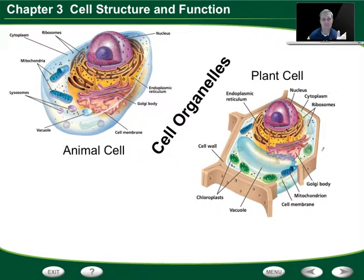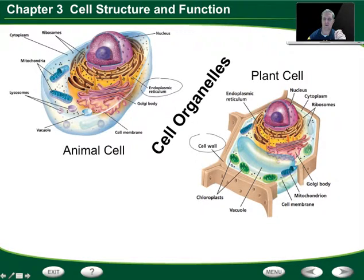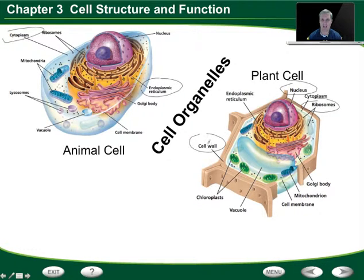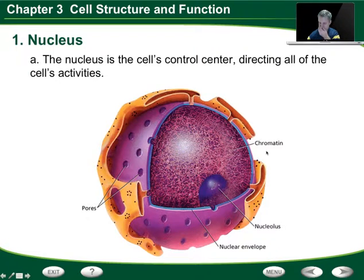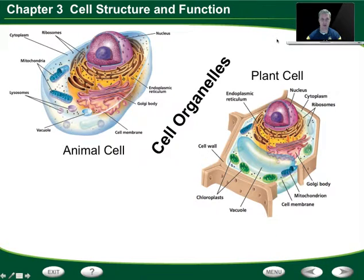We're going to go through each of these examples: the endoplasmic reticulum, cell wall, ribosomes, nucleus, and cytoplasm. All of these things are related to cytoplasmic or cell organelles. Think of organelles as little tiny organs — each one has a specific function. Let's start with probably the most important one. If we look in the center of our cell, we have what's known as the nucleus.